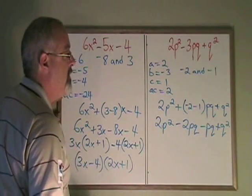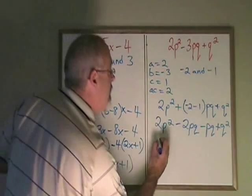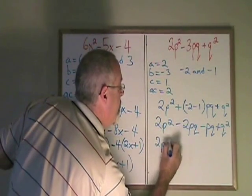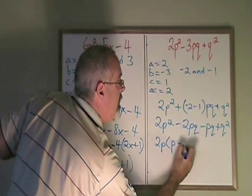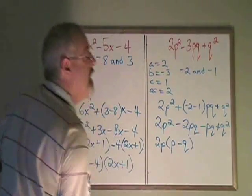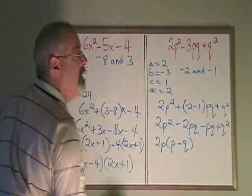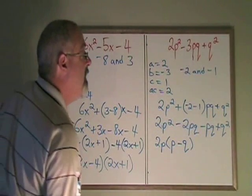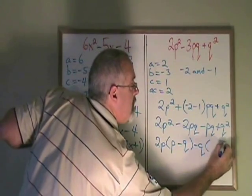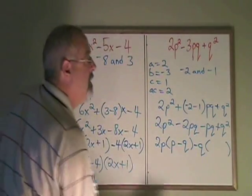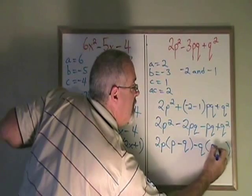The common factor of 2p squared and minus 2pq is going to be 2p. And when I factor it out, I get a p minus q. And the common factor of minus pq and q squared is going to be minus q, which gives me inside the bracket p minus q.